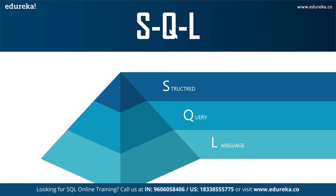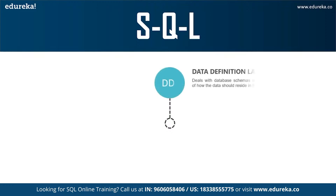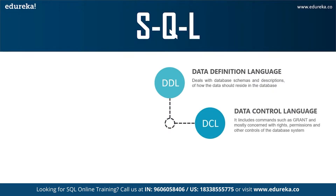The different subsets of SQL commands are as follows. DDL, that is Data Definition Language, simply deals with the description of the database schema and is used to create and modify the structure of database objects. It allows you to perform various operations on the database such as create, alter, and delete objects. DDL is very popular and extensively used when compared to other commands. Moving on to the next command, DCL — that is Data Control Language — allows you to control access to the database. The DCL commands Grant and Revoke: Grant gives user access privileges to the database, while Revoke withdraws user access privileges given by the Grant command.